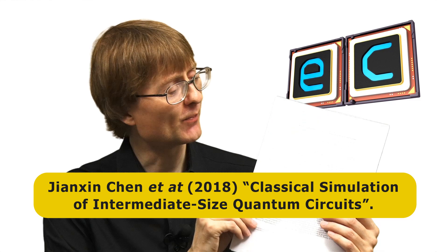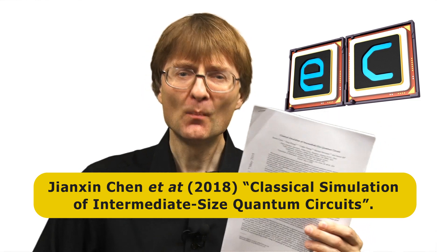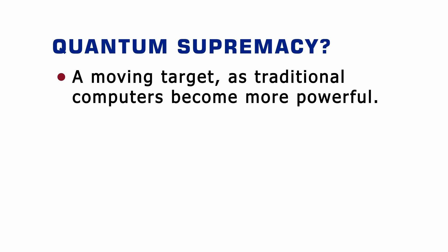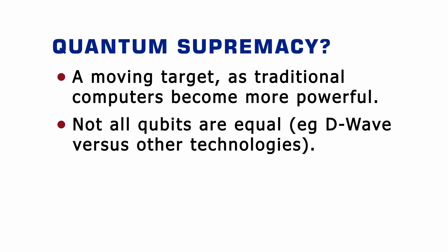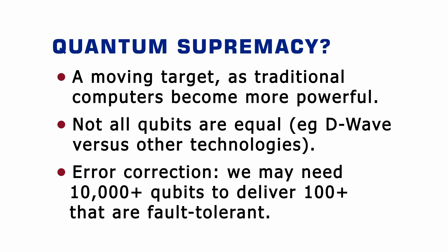Even Google's 72-qubit Bristlecone may not be up to the challenge, because in May 2018 researchers at Alibaba published a paper showing that type of hardware can still be simulated using traditional computers. More broadly, the more people think about quantum supremacy, the more complex and controversial the idea becomes — it's a moving target as classical computers keep improving. Not all qubits are equal, so it's difficult to determine a ballpark number required. D-Wave has built a 2,000-qubit adiabatic quantum computer using quantum annealing, but this is not necessarily more powerful than IBM or Google hardware with far fewer qubits. Error correction is also a major problem, and we may need tens of thousands of qubits to deliver a few hundred that are fault-tolerant enough to outperform any classical computer.